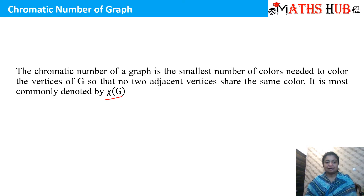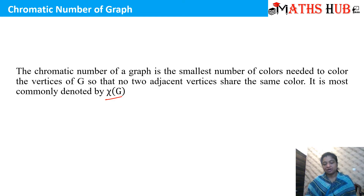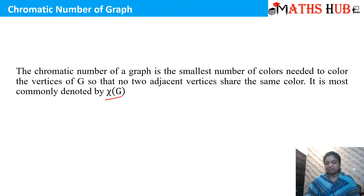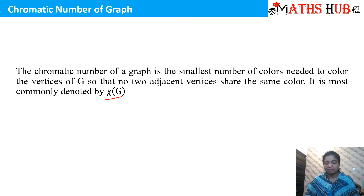The chromatic number is that number which tells us about the smallest number of colors that are required to color the vertices of a graph G so that the adjacent vertices they do not bear the same color.